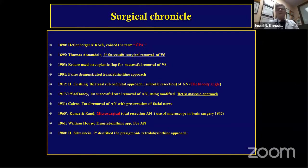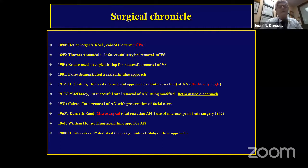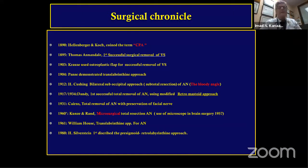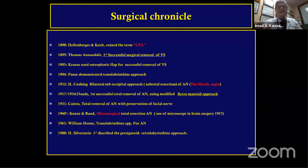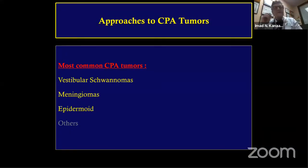Conso and Rand performed the first microsurgical total resection using the microscope in 1957. William House developed the translabyrinthine approach. The most common pathology we see in the CP angle is vestibular schwannoma, followed by meningioma and epidermoid.